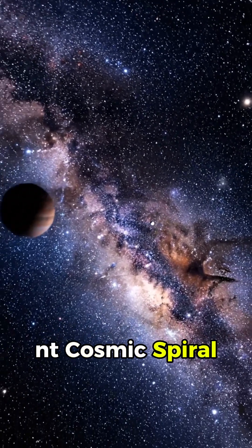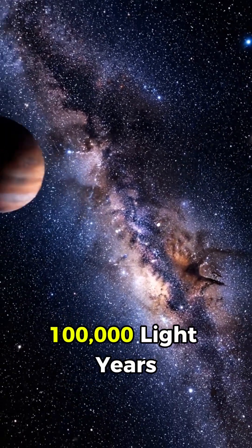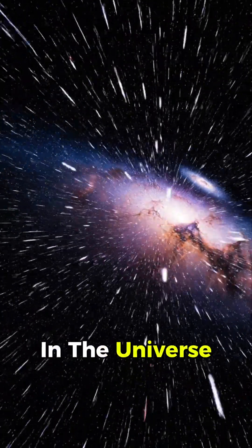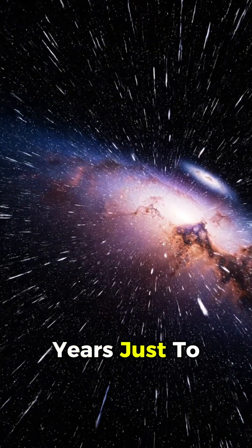trapped in a giant cosmic spiral that stretches about 100,000 light years across. Meaning, even light, the fastest thing in the universe, would need 100,000 years just to cross it.